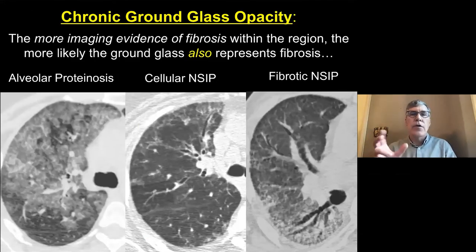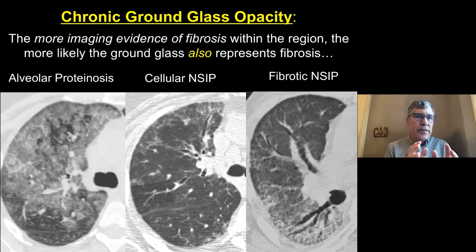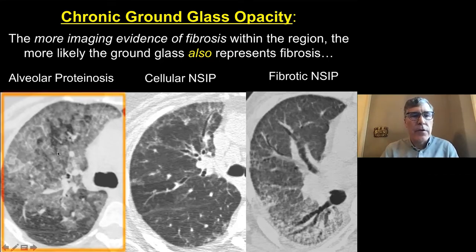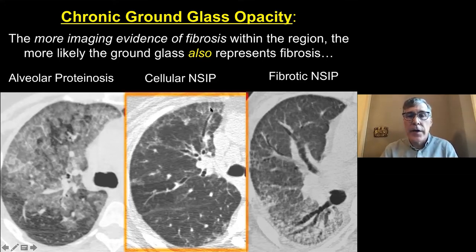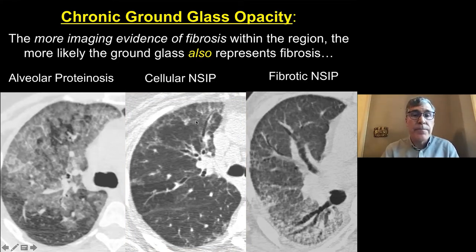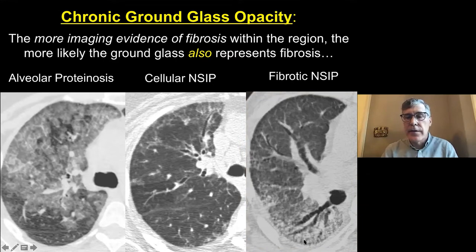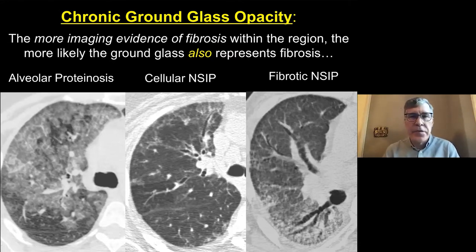For chronic ground glass: the more imaging evidence of fibrosis within that ground glass tells us it actually reflects fibrosis. A patient with a lot of ground glass but no imaging evidence of fibrosis and no traction — this isn't fibrosis; this represents alveolar proteinosis. Another patient with chronic ground glass, some irregular visceral pleura and traction represents some fibrosis. When you see traction bronchiectasis, irregular visceral pleura, and a diffuse serrated appearance — biopsy will show fibrosis, in this case fibrotic NSIP.